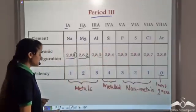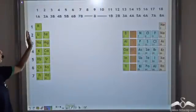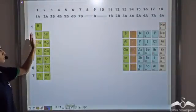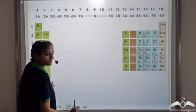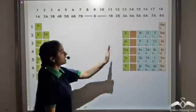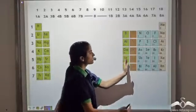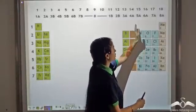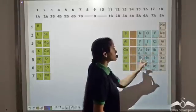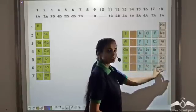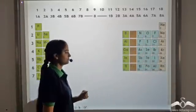To summarize the periodic table classification: elements belonging to groups 1A, 2A, and 3A are metals. Elements belonging to group 4A are metalloids. Elements belonging to groups 5A, 6A, and 7A are non-metals. The last group of elements are noble or inert gases.